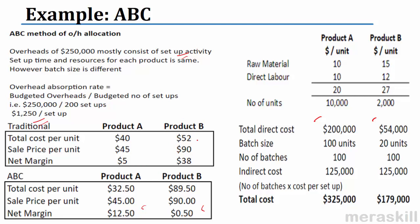This is why activity-based costing has gained importance — because overheads have gained importance today. The decisions regarding pricing of the product and product mix are critically affected. If I had thought I should make more units of B and less of A, now I have a completely different understanding of the costs of the two products. Thus, I can take better, more informed decisions.